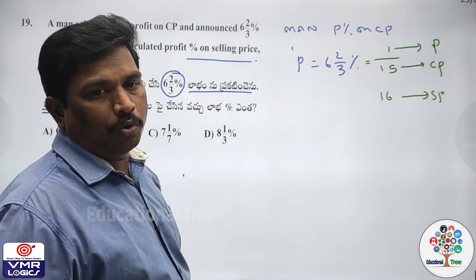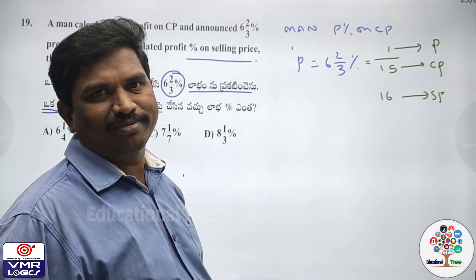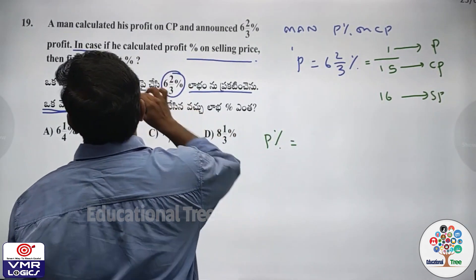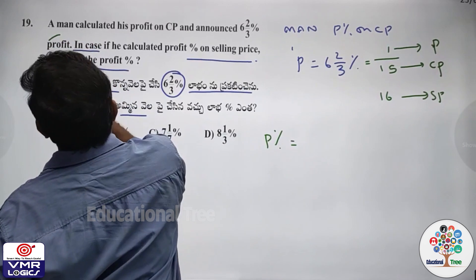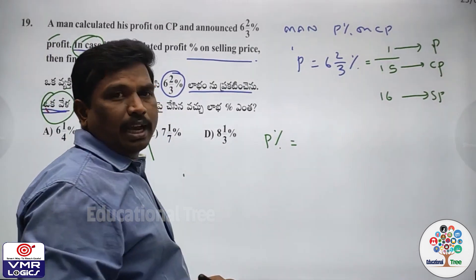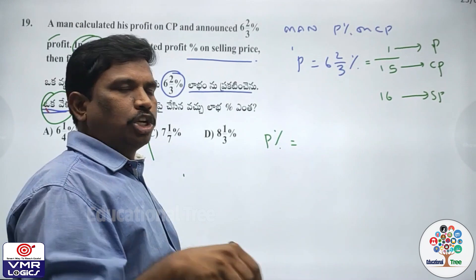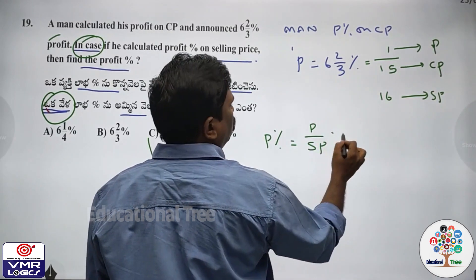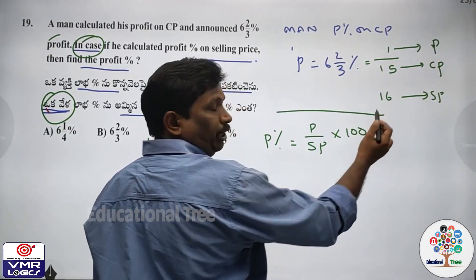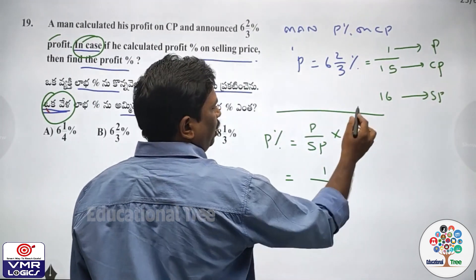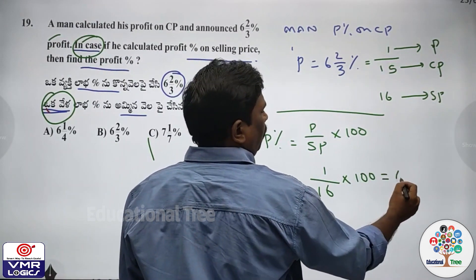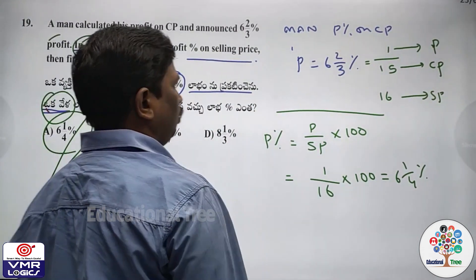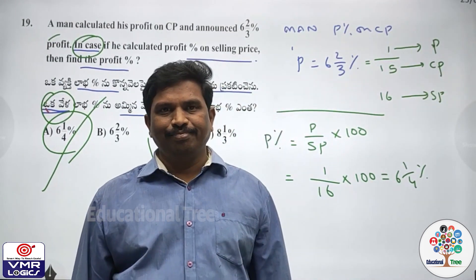I bought for 15 rupees, got 1 rupee profit, so I sold it for 16 rupees. Actual profit percent on SP: profit by SP into 100 = 1 by 16 = 6 and 1 by 4 percent profit.